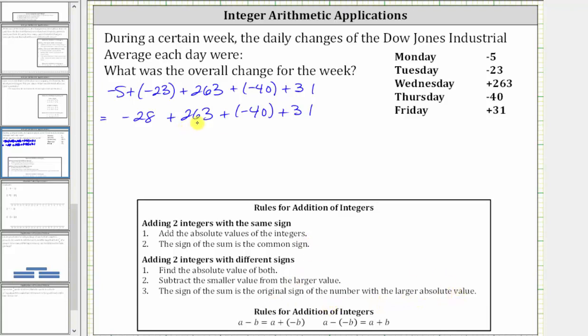And we already know the sum is going to be positive. So we take the absolute value of both. The absolute value of 263 is 263. The absolute value of negative 28 is 28. But now we subtract, because the integers have different signs.